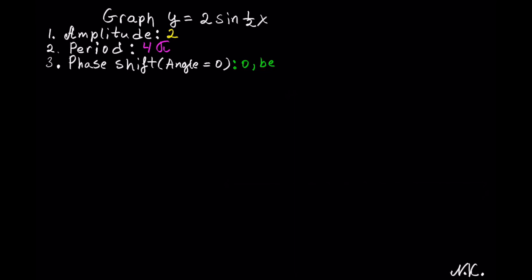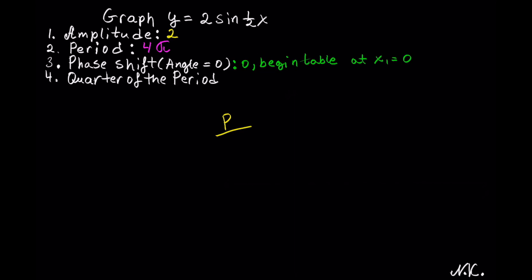You begin the table with the first x being equal to 0. The next thing to calculate is the quarter of the period. The reason you want to calculate it is because it lets you find the other 4 x values. Quarter of the period is calculated by taking the period and dividing it by 4. From the previous step we know the period is 4 pi, and we want to divide it into 4 equal pieces. 4 goes into 4 one time, so the quarter of the period is equal to pi.